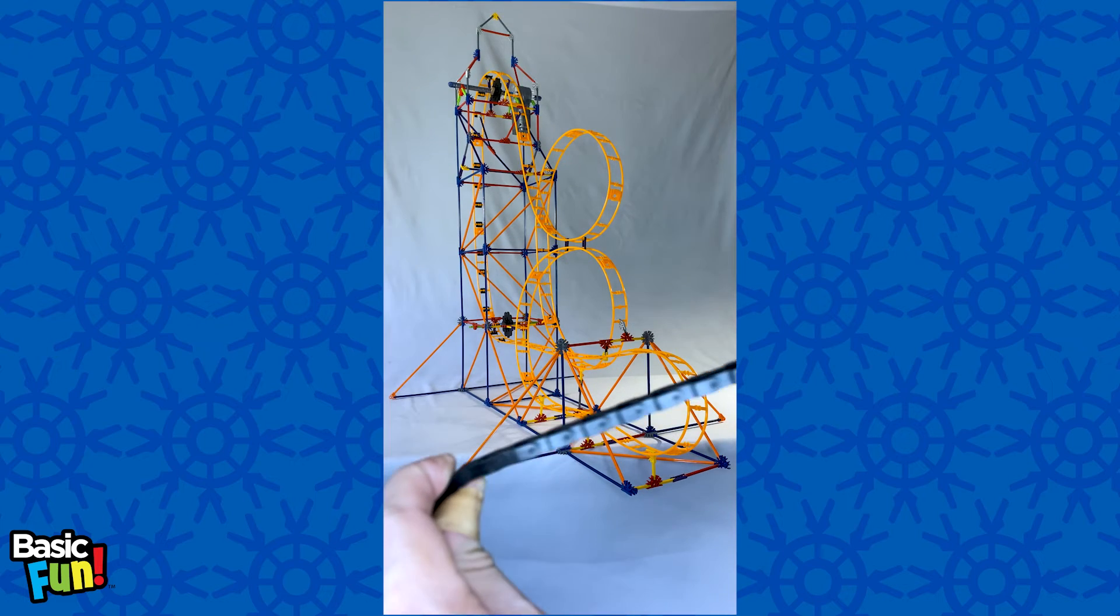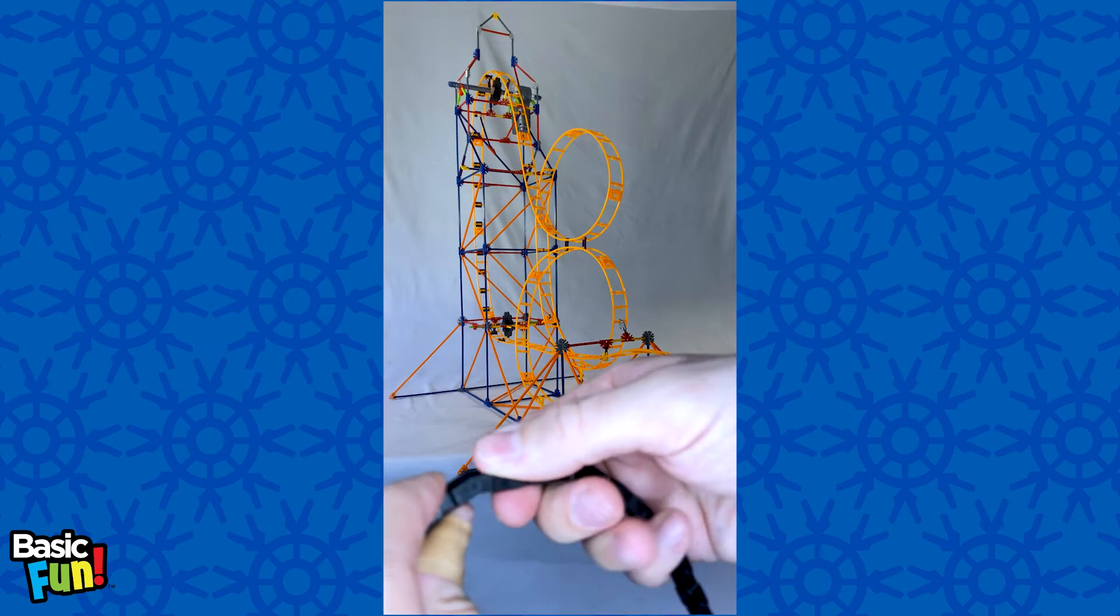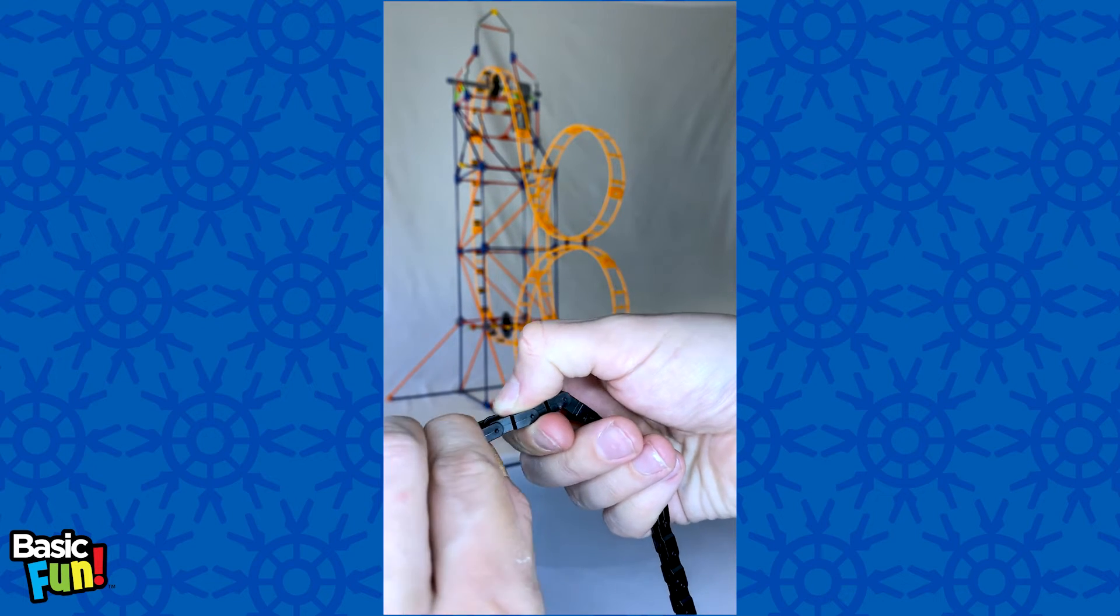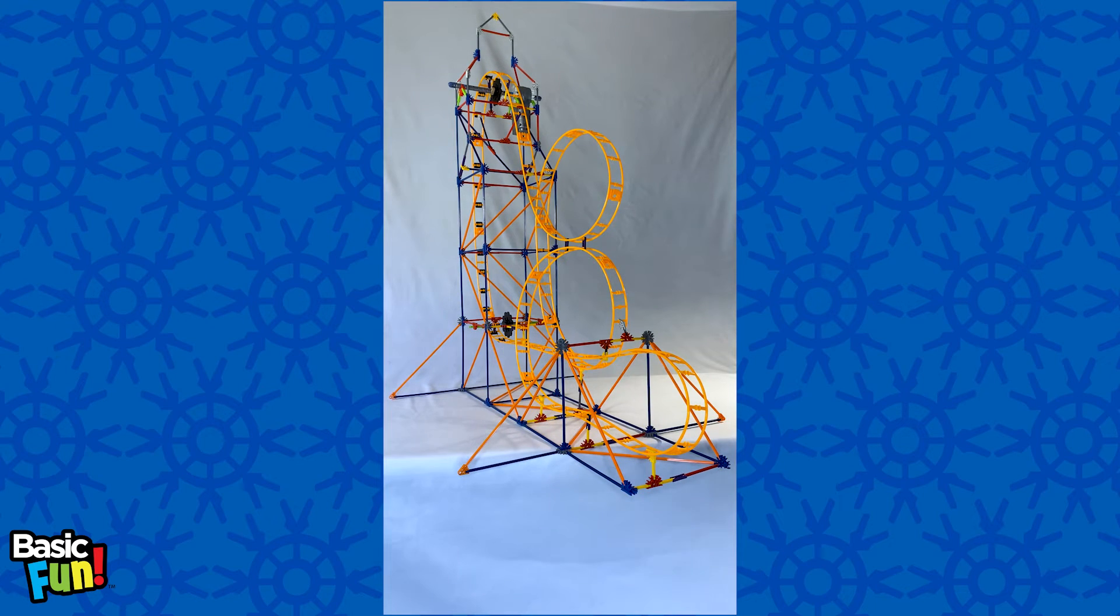If at any point you feel that something's off or there's a bump, what you can do is just take the chain and then press it together. You'll hear that click and then you're good to go.